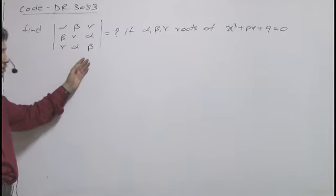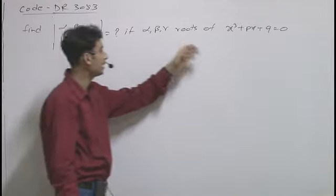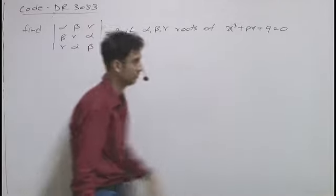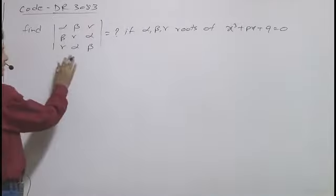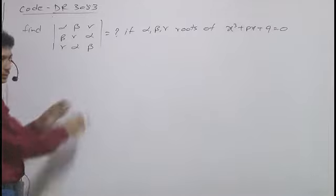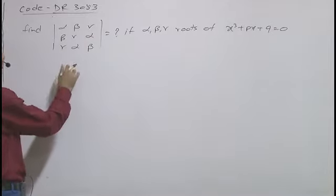We have to find the value of this determinant if alpha, beta, gamma are roots of this equation. Now, we can write this determinant as follows by operating row transformation.